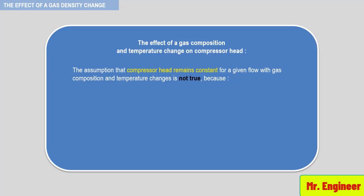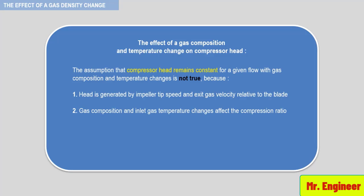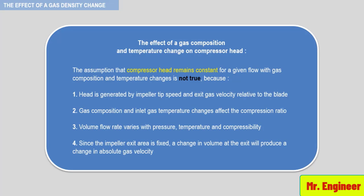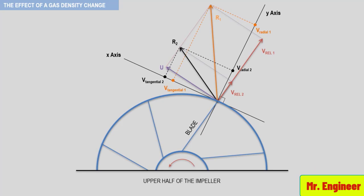Recall that head is generated by impeller tip speed and exit velocity relative to the blade. Gas composition and temperature changes will affect the compression ratio. The volume flow rate will change with pressure, temperature, and compressibility, and since the impeller exit area is fixed, a change in exit volume rate will produce a change in velocity. To better illustrate this concept, let's refer back to the figure which shows the relationship between gas relative velocity, blade tip speed, and tangential gas velocity in a centrifugal compressor.